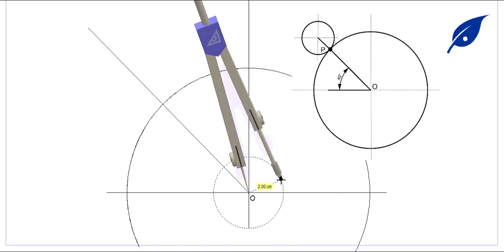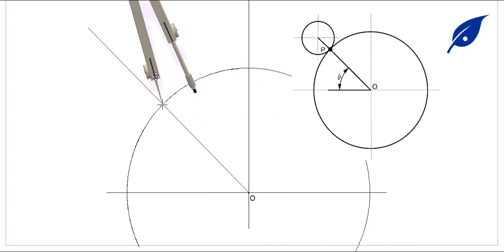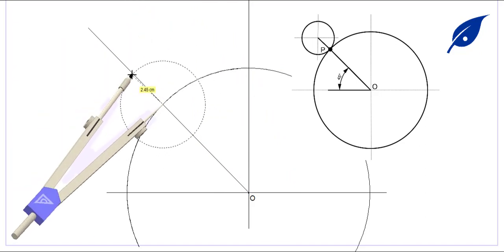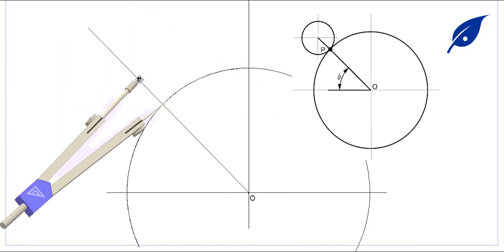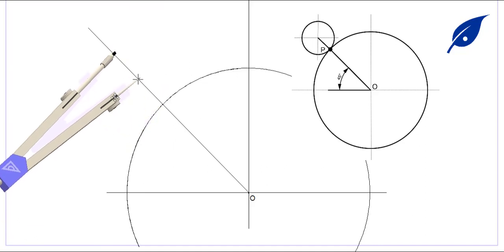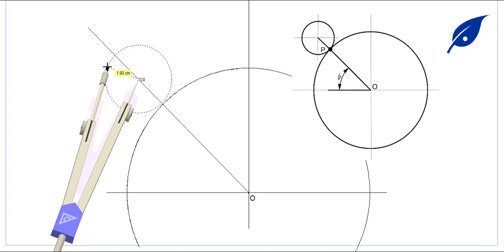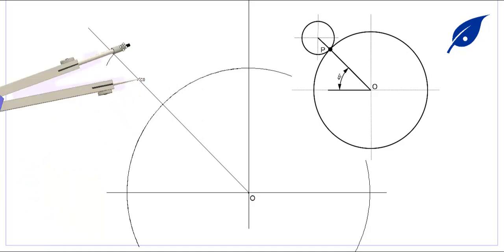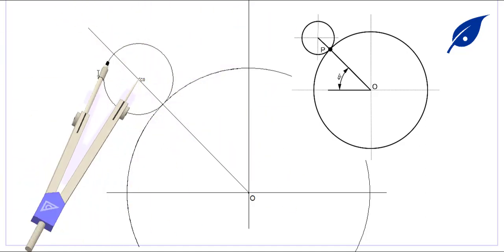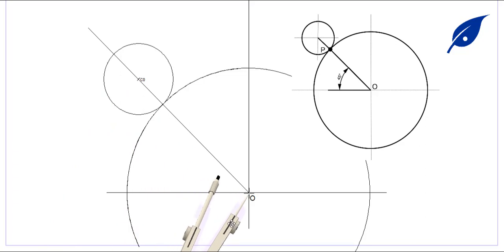At this point we'll construct the angle of 45 degrees. The next thing we have to do is on this line, we have to mark using the radius of the smaller circle which is 20 millimeters, mark on this line so that we'll be able to produce the circle.